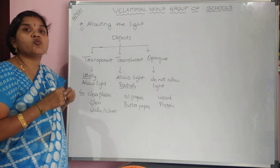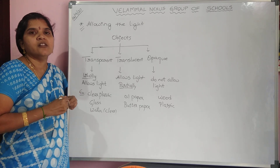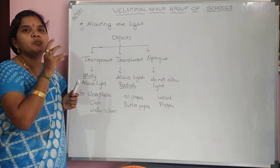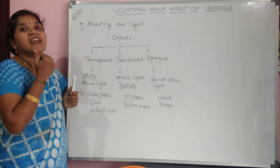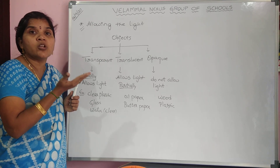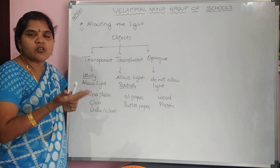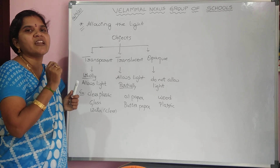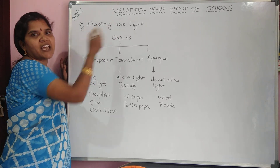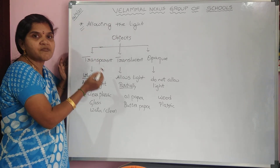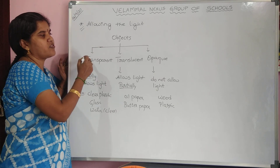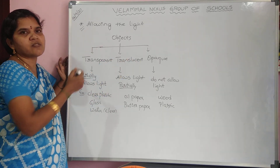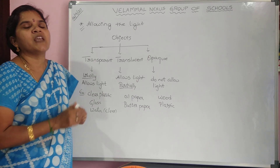So here we have learned three classifications. One is sources of light — natural and artificial. Second is objects classified based upon light emission — luminous and non-luminous. Third is based upon passage of light — transparent, translucent, and opaque.